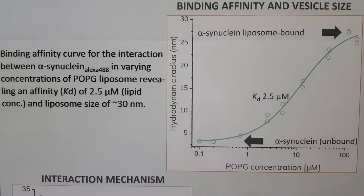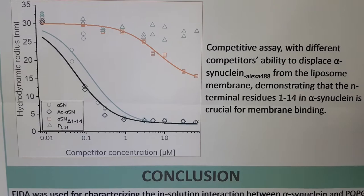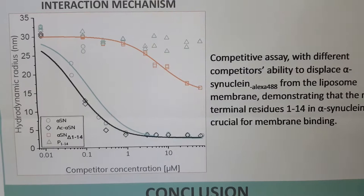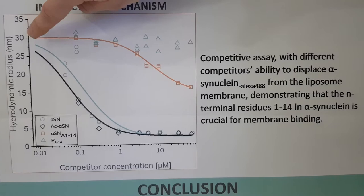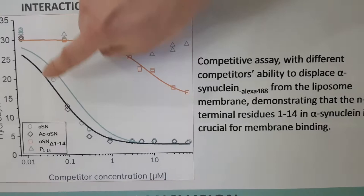We then took a data point and applied it to a competitive format. We have our alpha-synuclein–liposome complex and add different competitors to see their ability to out-compete alpha-synuclein. First, alpha-synuclein wild type non-labeled is fully able to displace alpha-synuclein from the liposome membrane. Further, an acetylated variant is also able to fully displace alpha-synuclein.